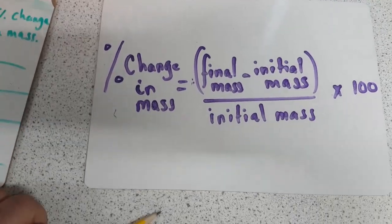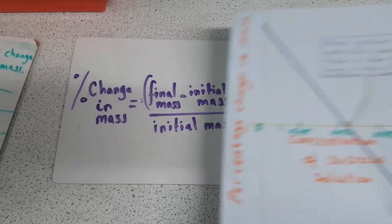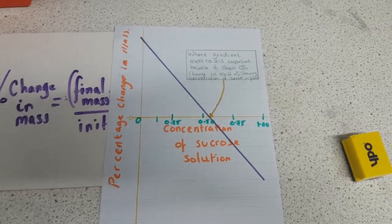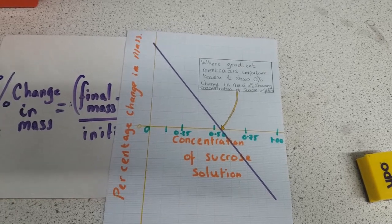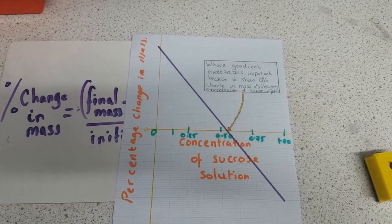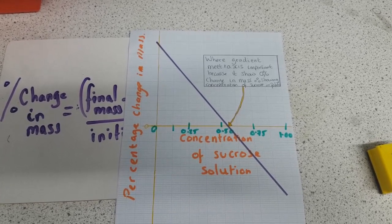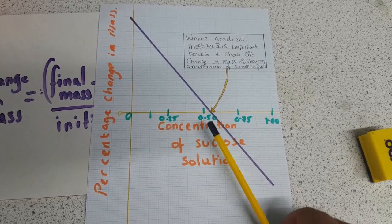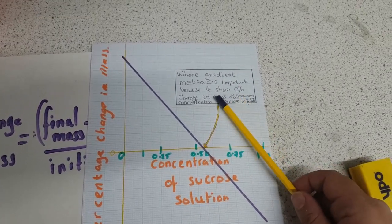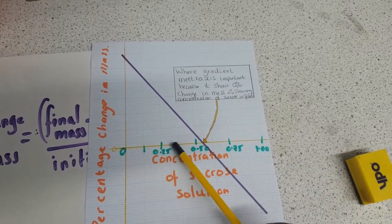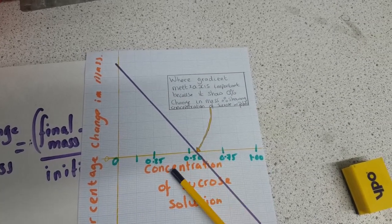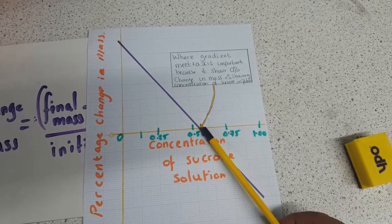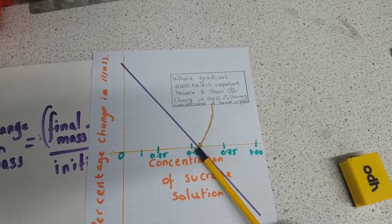Then what you need to do with your results is as follows. You need to draw a graph. The graph will be percentage change in mass on the y-axis versus concentration of sucrose solution in moles. So I forgot the units there, which is not good, but you need to add that in. And draw, plot your data. Then what you'll have is you'll have a graph that has a negative gradient. And the important bit about this graph is this point here, where the gradient meets the x-axis. It's important because it shows no change, so zero change in mass. So what this is telling you is that no water entered and no water left via osmosis. So in other words, this is telling you the concentration of the potato, the concentration of sugar within the potato.